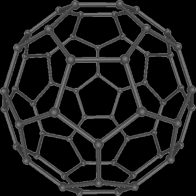Inspired by Feynman's concepts, K. Eric Drexler used the term "nanotechnology" in his 1986 book "The Coming Era of Nanotechnology," which proposed the idea of a nanoscale assembler which would be able to build a copy of itself and of other items of arbitrary complexity with atomic control. Also in 1986, Drexler co-founded the Foresight Institute to help increase public awareness and understanding of nanotechnology concepts and implications. Thus, the emergence of nanotechnology as a field in the 1980s occurred through convergence of Drexler's theoretical and public work, which developed and popularized a conceptual framework for nanotechnology, and high visibility experimental advances that drew additional wide-scale attention to the prospects of atomic control of matter.